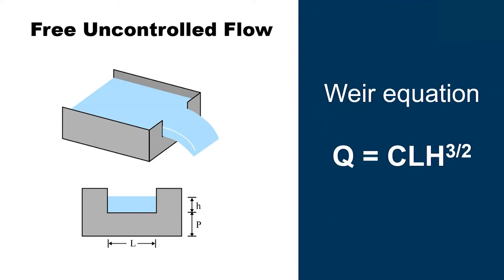The discharge coefficient can be estimated using various design charts found in Engineering Manual 1110-2-1603, and it is mostly a function of the approach channel depth relative to the design head. One important caution: make sure the figure you use corresponds to the dam characteristics you have. It's easy to use the wrong one, because some figures apply to flat face spillways, some to OG Weirs, and some to other configurations, so use the one appropriate for your actual dam.